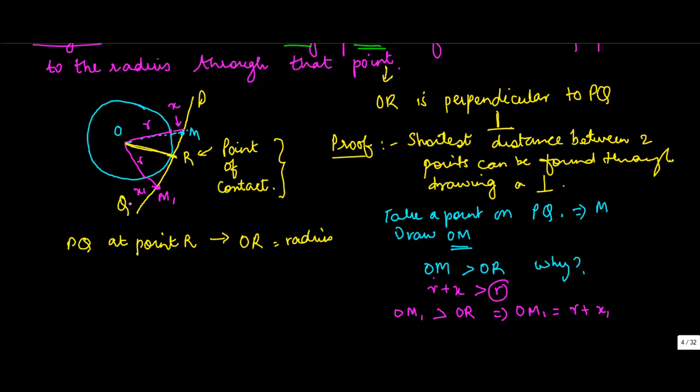Now if you take any point on this line which just touches the radius at this point, it is going to be greater than r, which means that OR is the shortest distance between O and PQ.